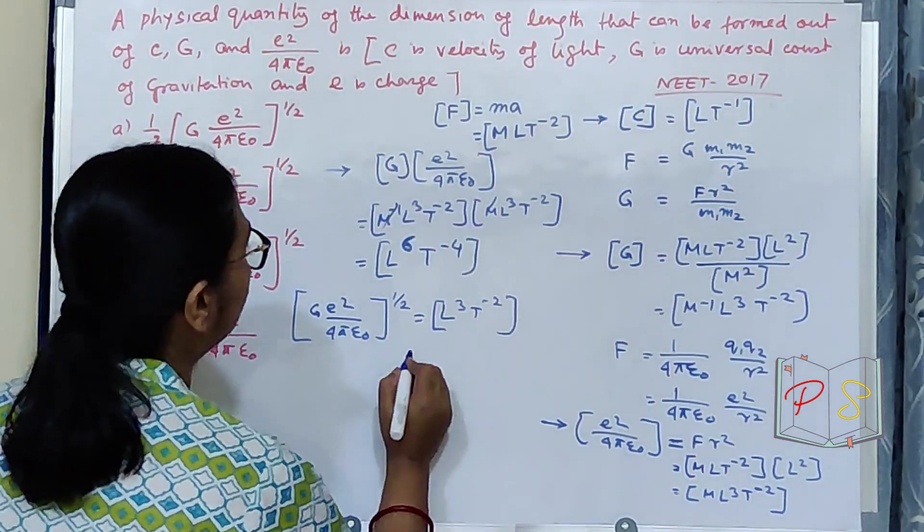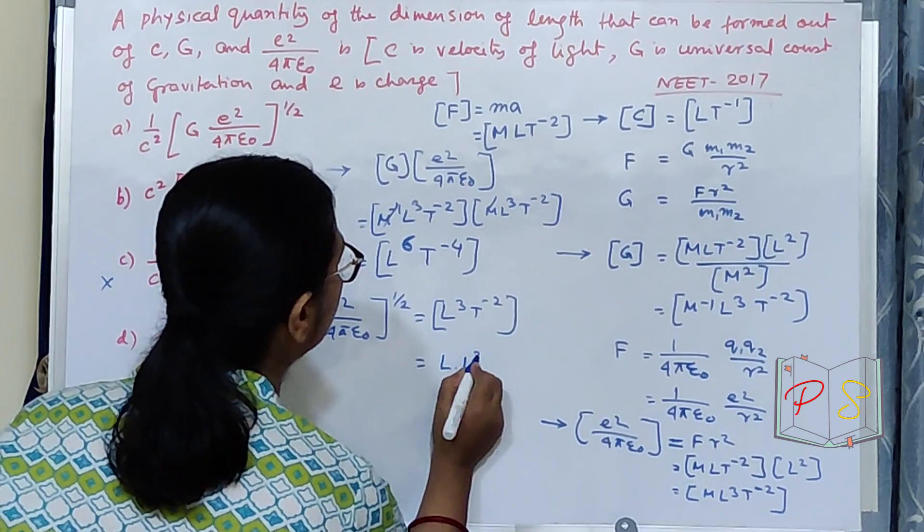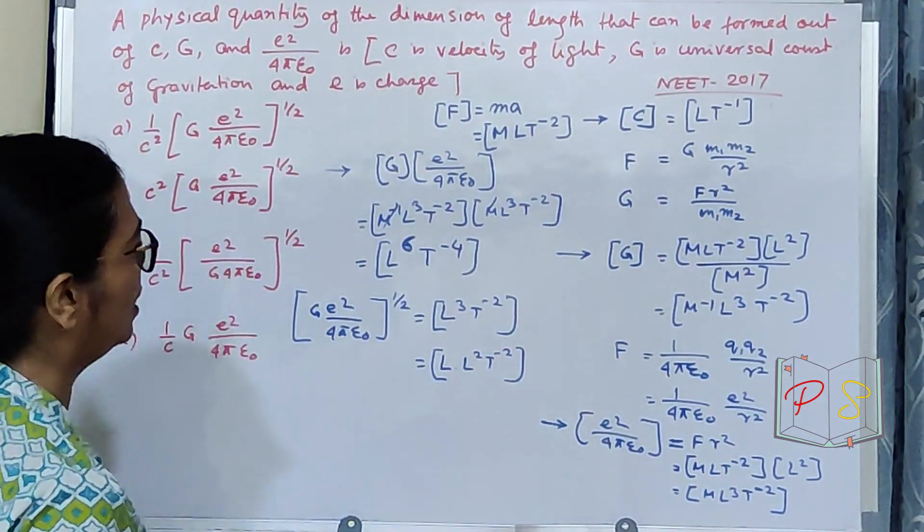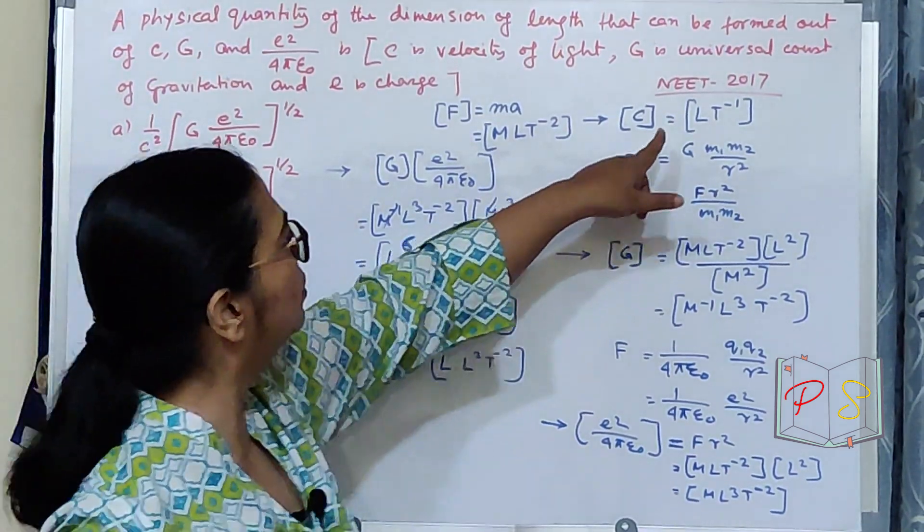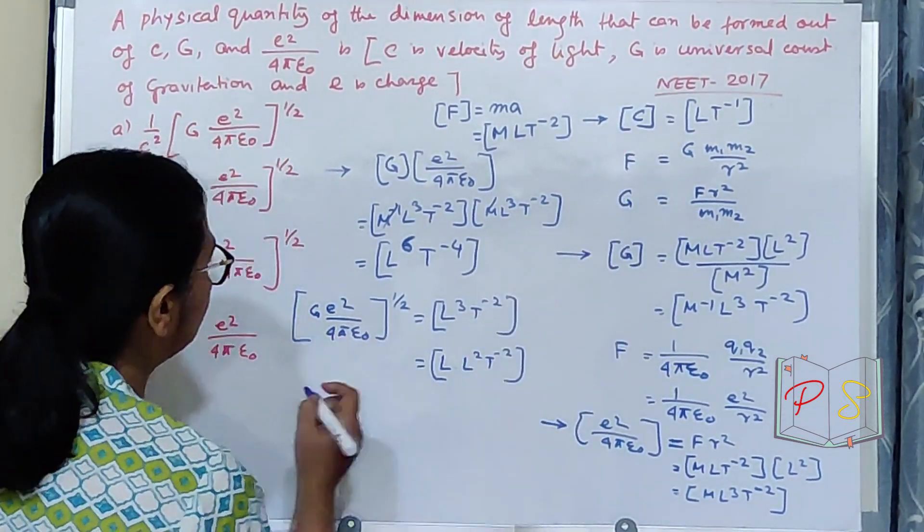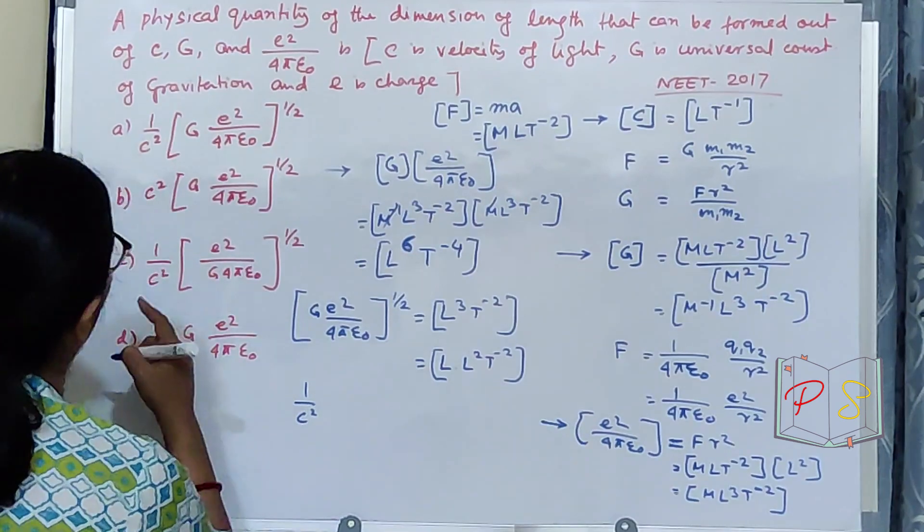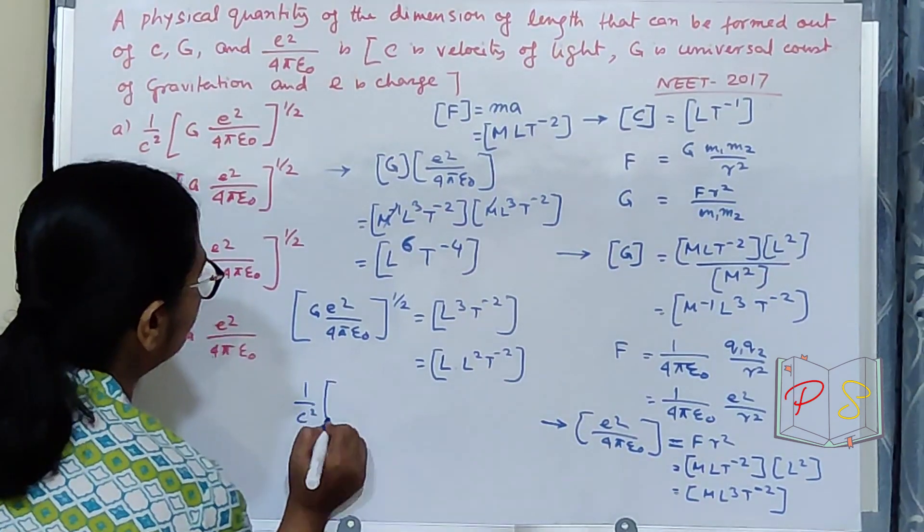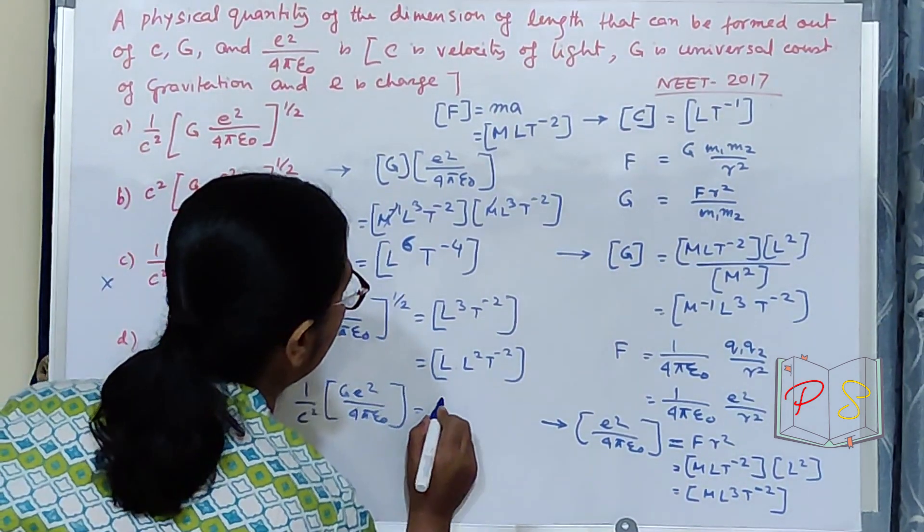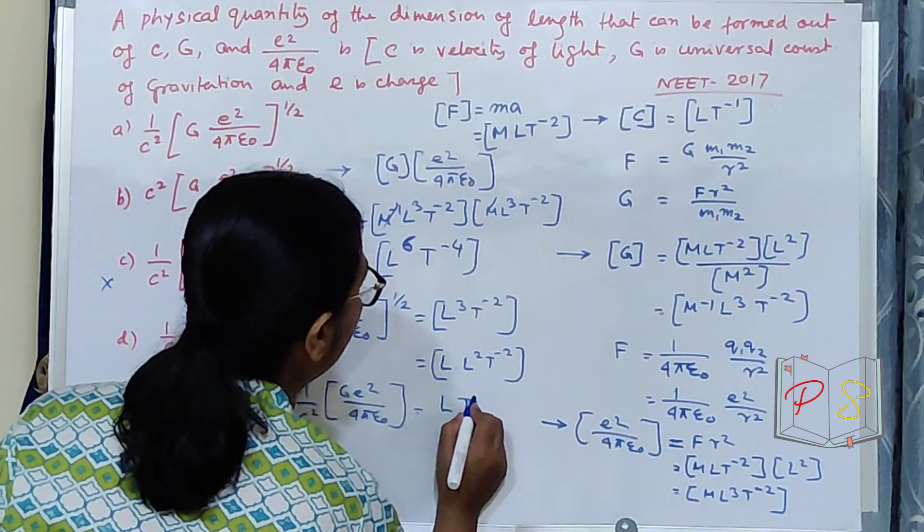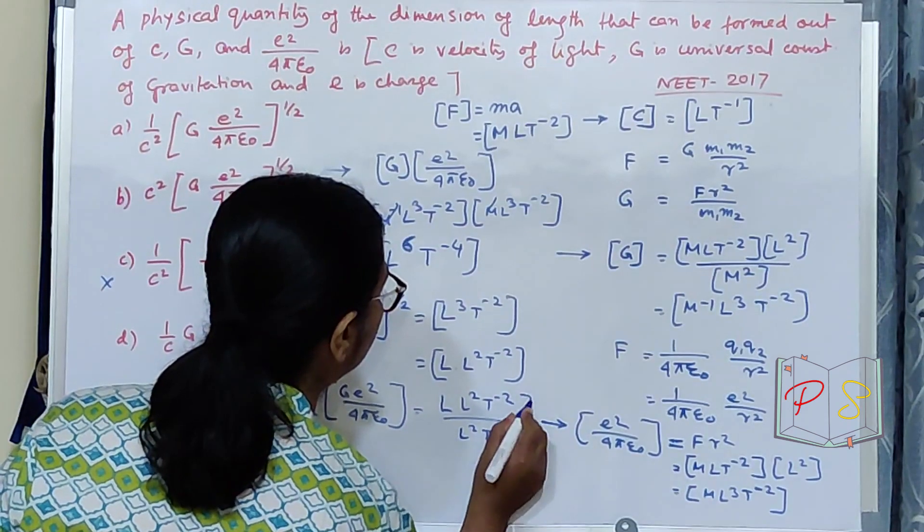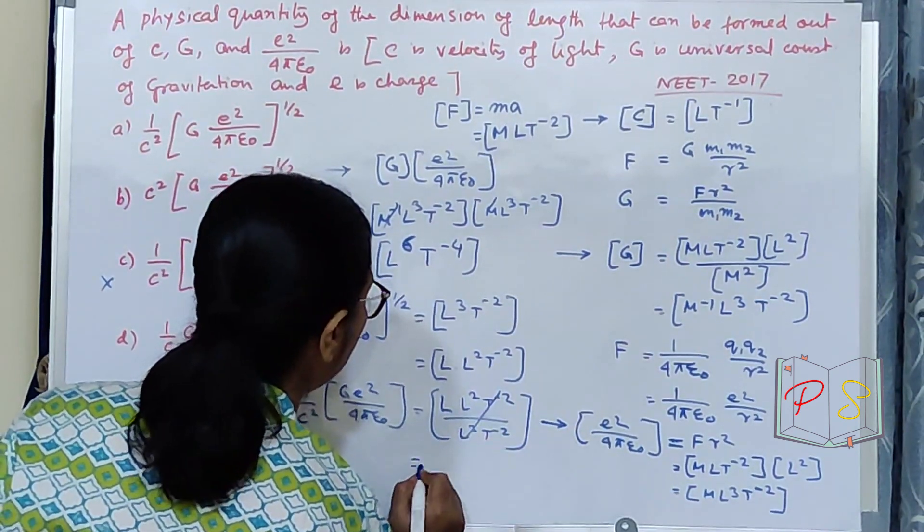Now, what I will do? This thing is L into L square T minus 2. I have one L separated out. And L 2 T minus 2. That will come as C square. If I divide this thing. So, if I make it 1 upon C square, 1 upon C square, G E square upon 4 pi epsilon naught, I will get L square T minus 2 divided by L square T minus 2 which gives me L only.